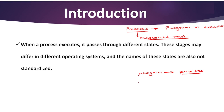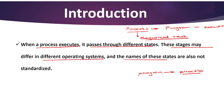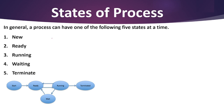A process performs all the tasks mentioned in that program. Now, when a process executes, it passes through different states. These states or stages may differ in different operating systems, and the number of states is also not standardized — the names of these states are not standardized either. So in this video, the names I'm going to tell you are from a general operating system. We have basically five stages.